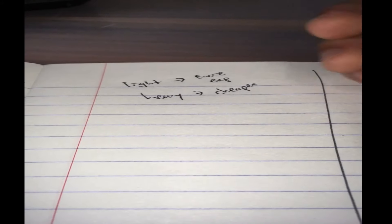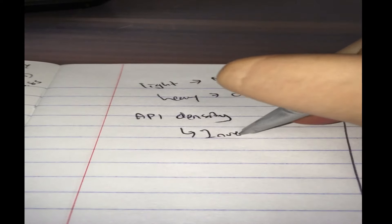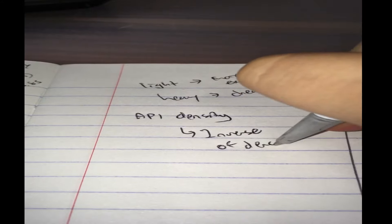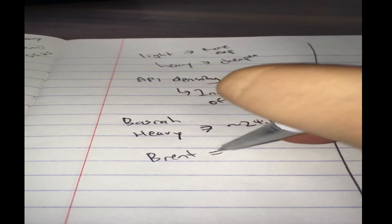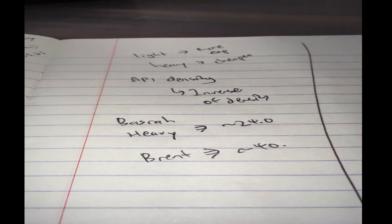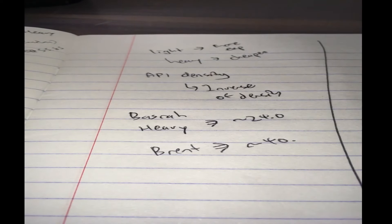Usually what people use to measure a crude's lightness or heaviness is not going to be this, because this is like six or seven numbers. They have something called the API density. API density is the inverse of density. So the more your API, the lighter your crude. Basra Heavy, this API is about 24. And Brent, the good stuff, 40. So an API 40 and above is usually considered light crude.